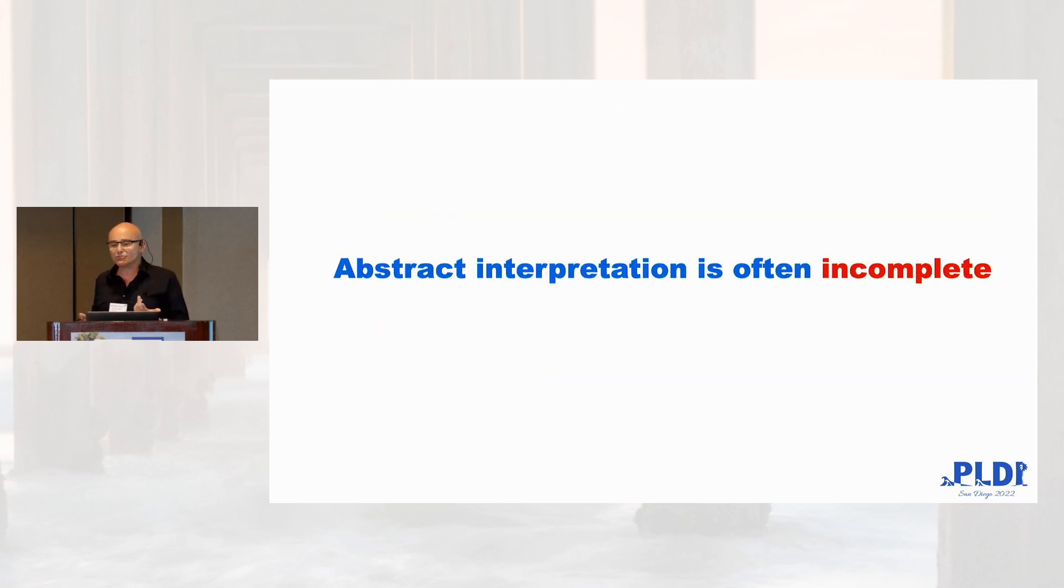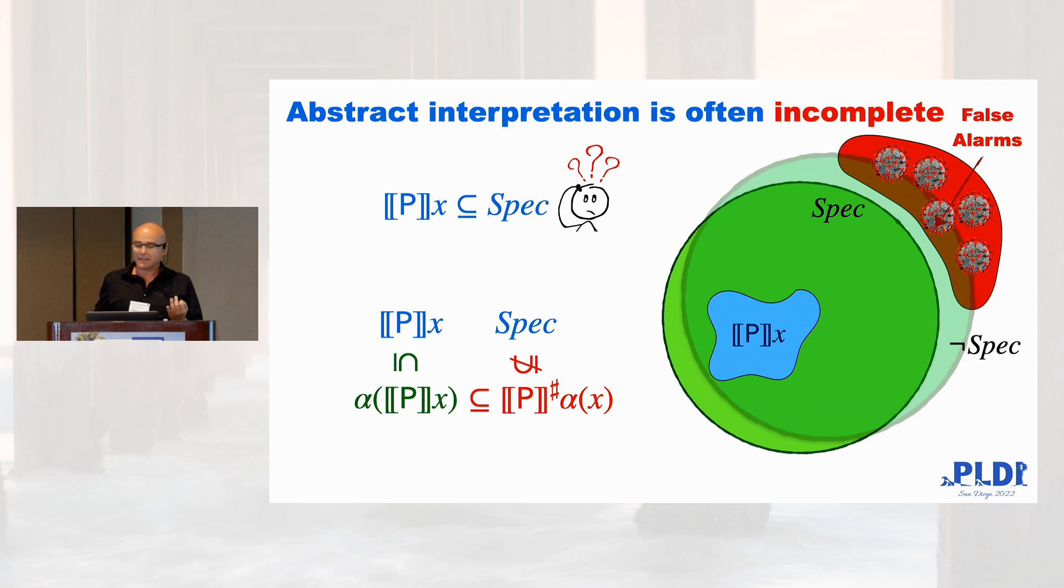But usually, more often, abstract interpretation is incomplete. That means that, same situation as before, but during the computation of the abstract interpreter, you lose precision, and you cannot anymore claim that your specification is satisfied, even if the program satisfies the specification.